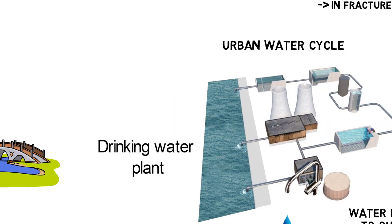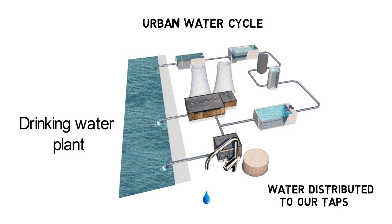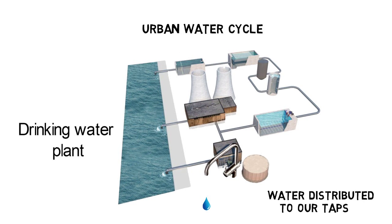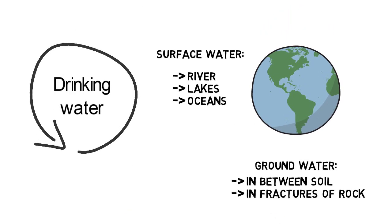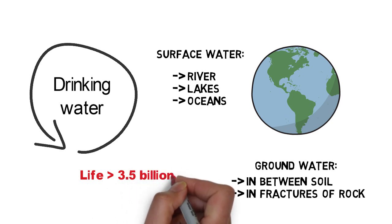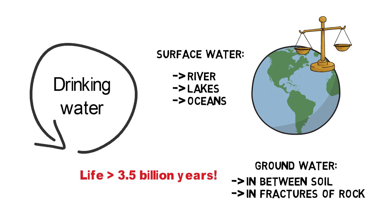It's difficult to determine exactly how many times your tap water was consumed before you do, but just imagine that water is most essential for life and that life has existed for at least 3.5 billion years on our planet. Earth had exactly the same amount of water millions of years ago as it has today.